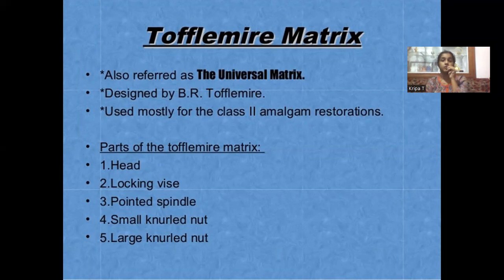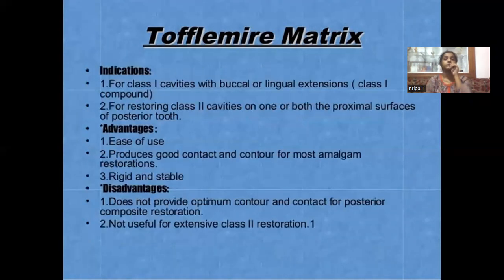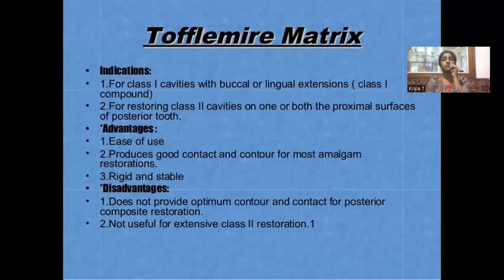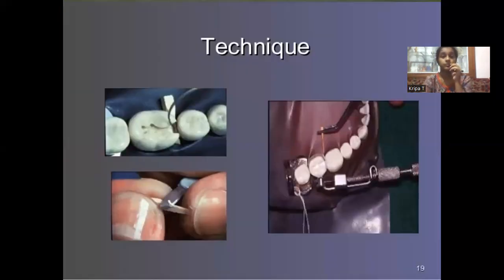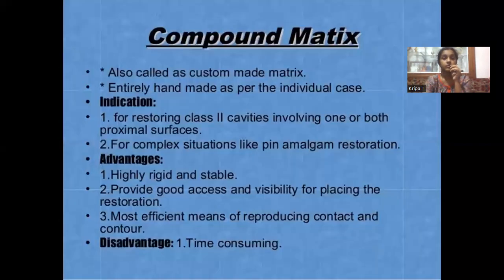The parts of the Toffelmeyer retainer include head, locking vice, pointed spindle, small knurled nut, and large knurled nut. Toffelmeyer is indicated for class 1 with buccal or lingual extension, and for restoring class 2 — one or both proximal aspects of posterior teeth, meaning MO, DO, or MOD. The advantage is ease of use — they are rigid and stable and provide a better contact and contour for amalgam. Disadvantage: not so useful for very extensive amalgam restorations, and for posterior composites, they do not provide optimal contour.